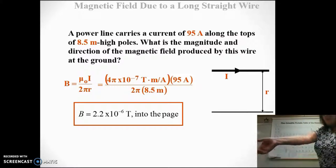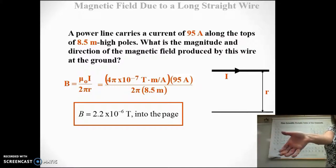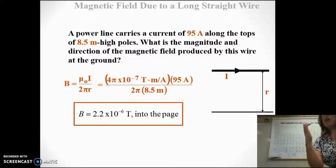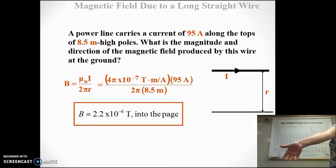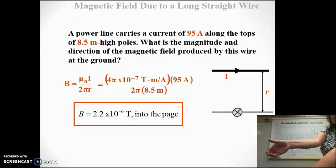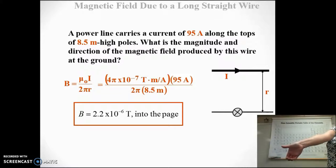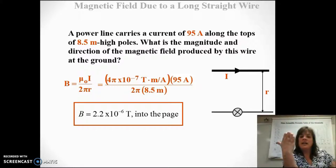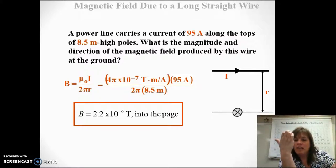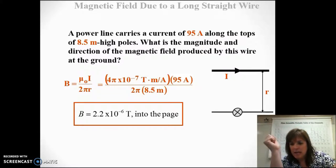There's our current moving to the right. Put your hand like a claw, and down below the wire your fingers are pointing into the page, so our symbol for that would be an X — into the page is an X. Now if I wanted to know about above the wire — because maybe I'm worried about the birds — I'd rotate my hand and my fingers would be pointing out of the page.